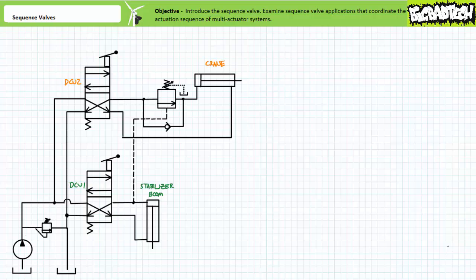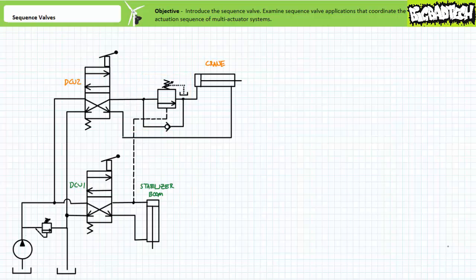Not all sequence valves use internal pilot lines. Consider a sequence valve with an external remote pilot line used to coordinate two separate actuators using two independent directional control valves. The classic application example being the stabilizing booms used on crane or ladder trucks. The booms must first make contact with the ground before the crane or ladder can be extended. The external pilot line on the sequence valve on the cap end of the cylinder used to extend the crane ensures that despite the crane action being operator controlled, sufficient pressure must exist in the booms prior to doing so.